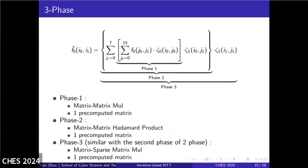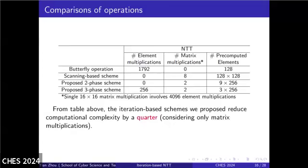After introducing each scheme, it is essential to compare the computational complexity of all NTT implementation schemes. The table shows the computational complexity for the butterfly operation, the scanning-based scheme, and our proposed iteration-based scheme. The comparison dimensions include the number of element-wise multiplications, the number of matrix multiplications, and the size of the pre-computed tables. Note that the matrix multiplications here pertain to 16×16 matrices. The butterfly operation exhibits the best computational complexity overall. However, among the matrix-based implementations, our proposed iteration-based scheme demonstrates a computational complexity that is only one-fourth that of the scanning-based scheme, with significantly smaller pre-computed tables.